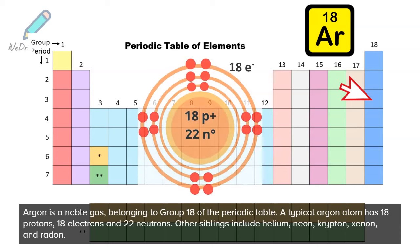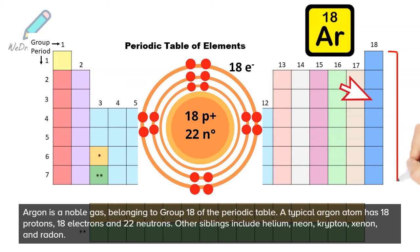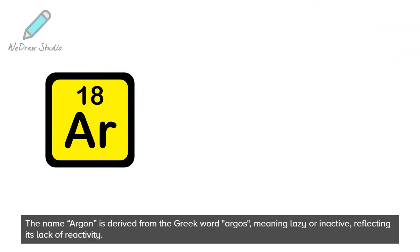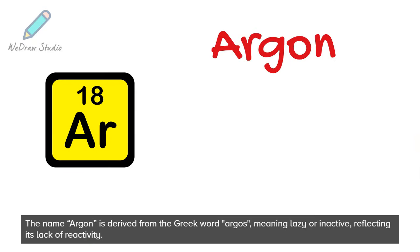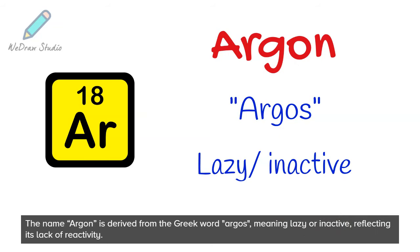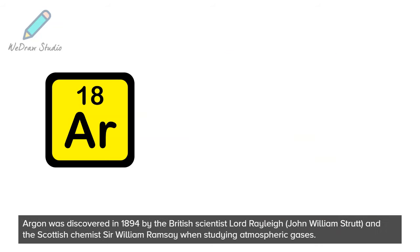Other siblings include helium, neon, krypton, xenon, and radon. The name argon is derived from the Greek word 'argos,' meaning lazy or inactive, reflecting its lack of reactivity.